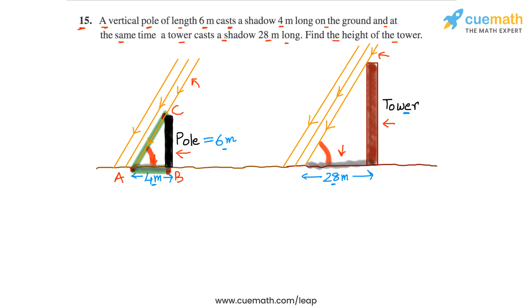Similarly, consider the triangle formed by the top of the tower, the foot of the tower, and the tip of the tower's shadow — let's call these points P, Q, R. Triangle PQR is also a right-angled triangle. It's easy to see that these two triangles must be similar.